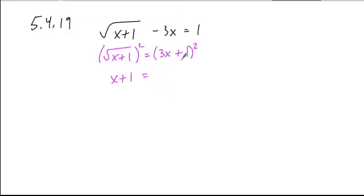We do have to expand this binomial square. Square the first term: square the 3, square the x to get 9x². Double the product of the terms: 3x times 1 is 3x, doubled is 6x. Square the last term plus 1.